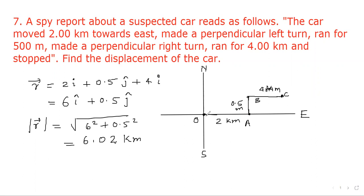So total displacement from O to C is equal to 6.02 kilometers. Now we have to find out the angle that the resultant makes with the east. So let's write tan beta. Tan beta would be coefficient of j-cap 0.5 divided by 6, or 5 by 60 which is 1 by 12. So we can say beta equals tan inverse 1 upon 12.